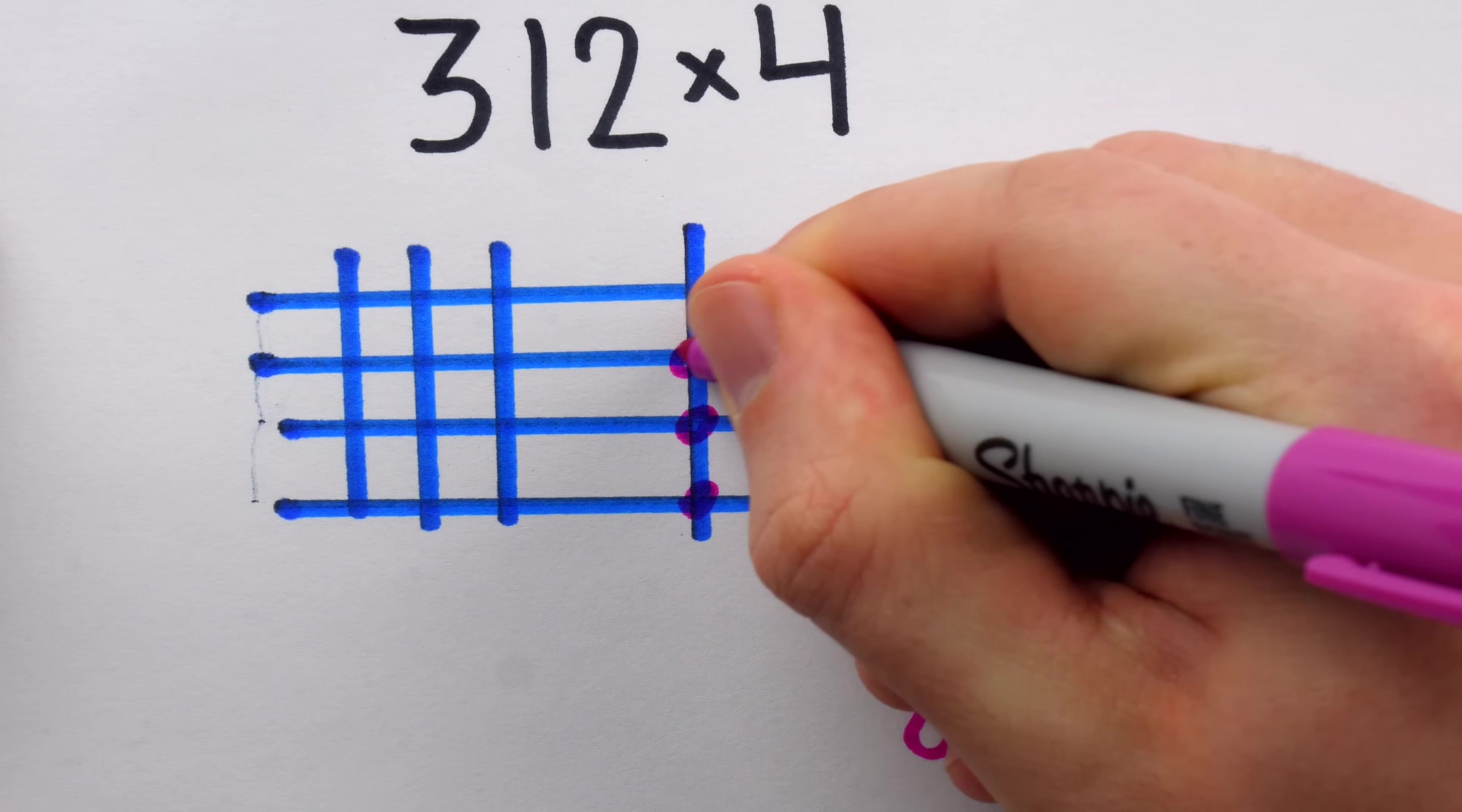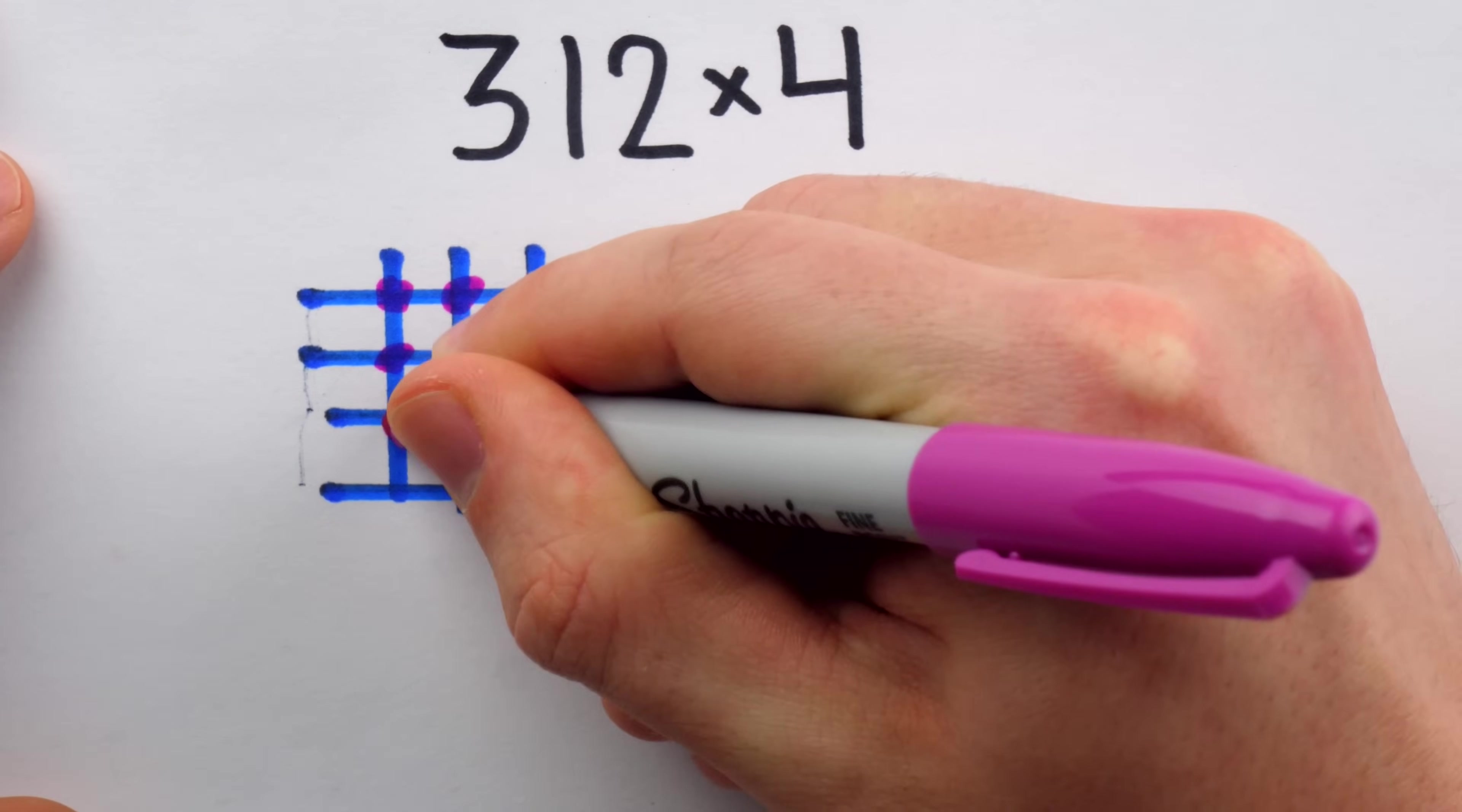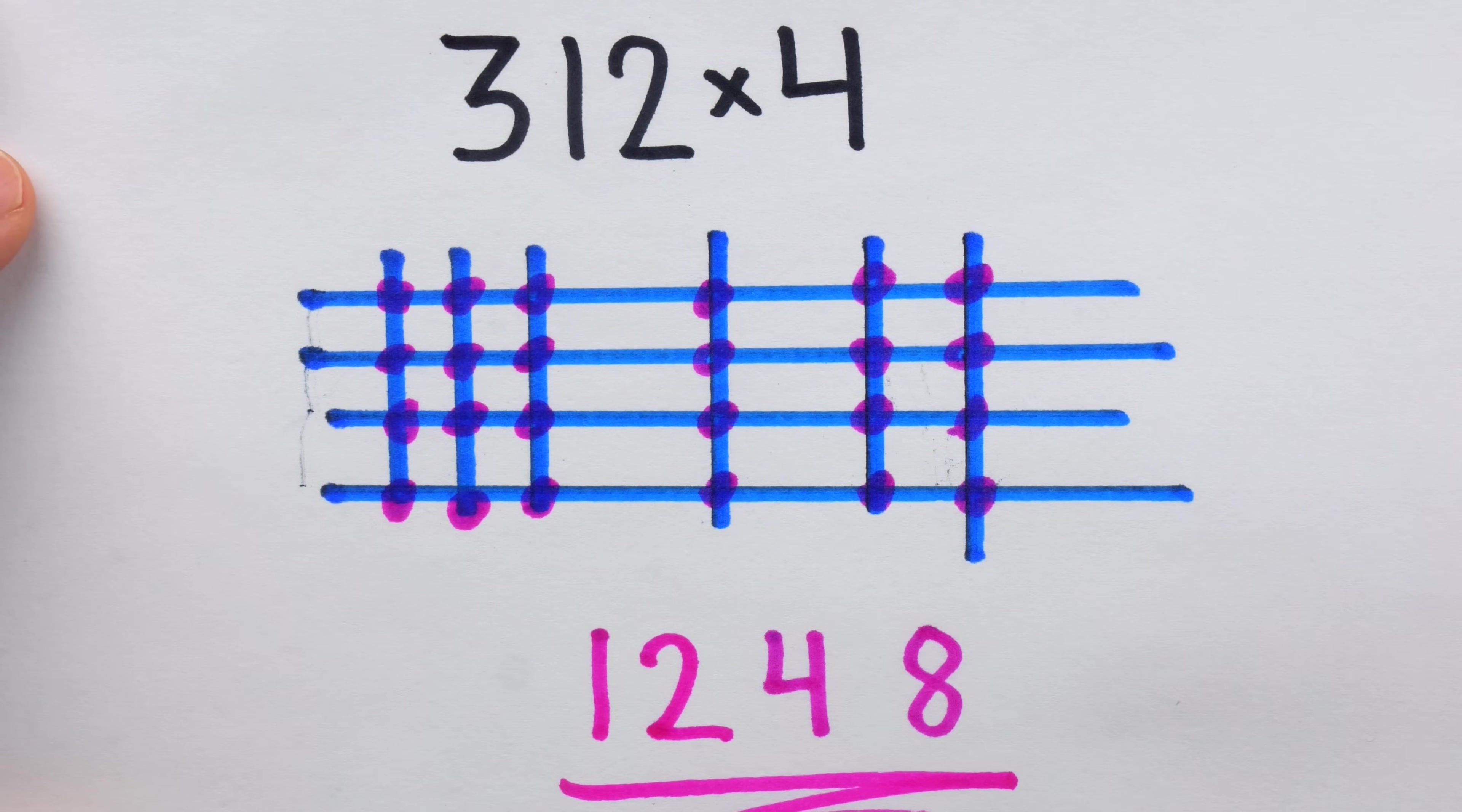Four intersections here gives us a four in the tens place, and then twelve intersections over here gives us a twelve in the hundreds place, which is 1,000 and 200. For a final, correct answer of 1,248.